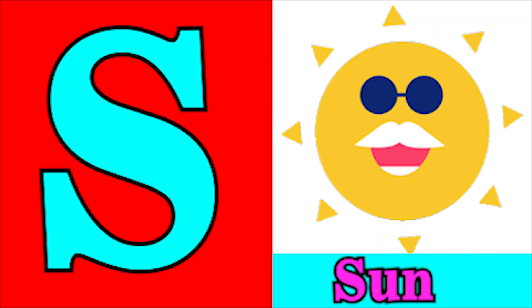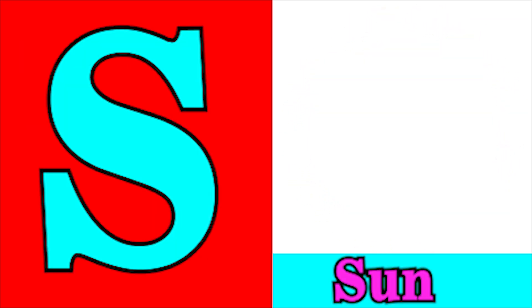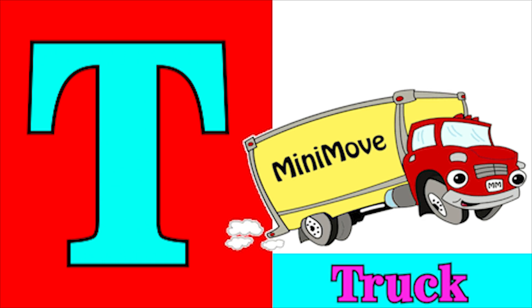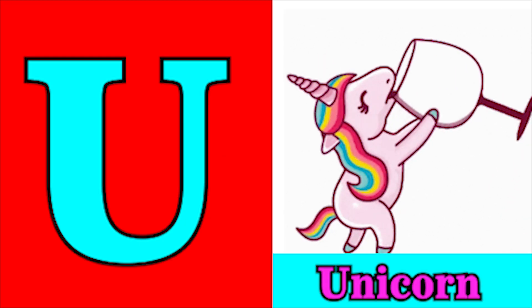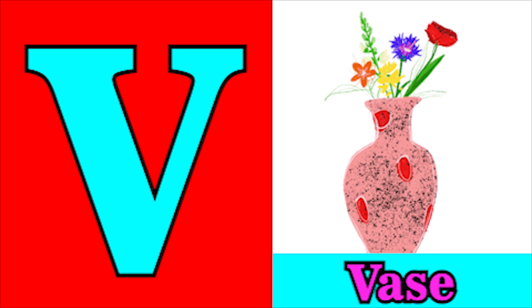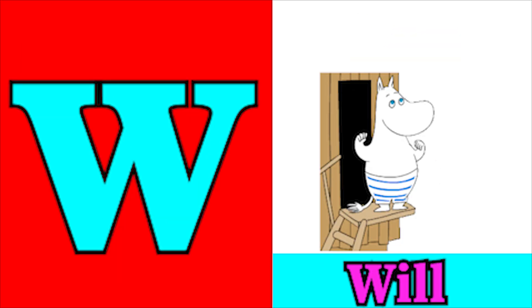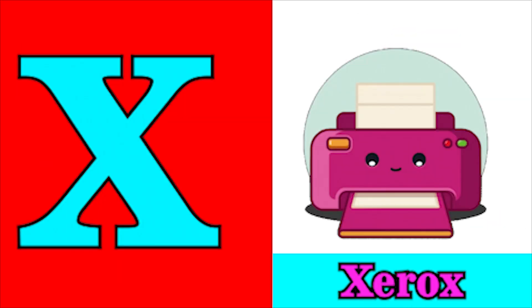S for sun, T for tub, U for unicorn, V for vase, W for whale, X for zero.